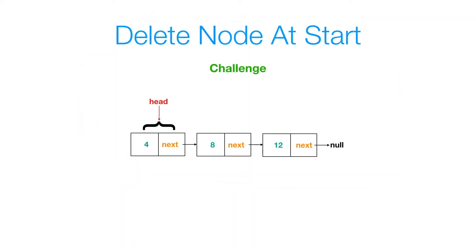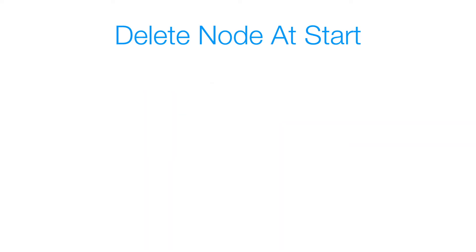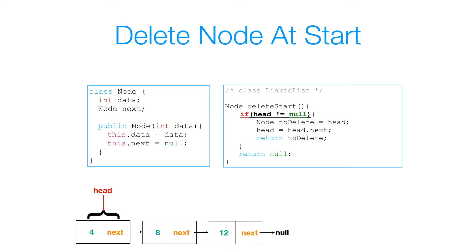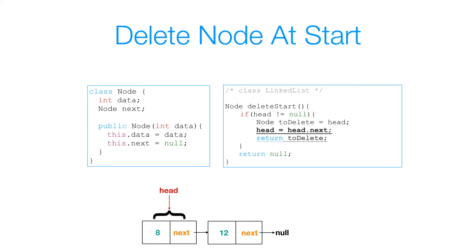Now I challenge you to delete a node at the start of a list. Suppose the node at the start has data 4 — I want to remove it so head now references the node with data 8. Here's the solution: first I check if head is not equal to null; if head is null I just return null. Otherwise I create a second reference variable called toDelete that references the same object my head references, then set head equal to head.next, and return toDelete. We've successfully deleted the node at the start of our linked list.